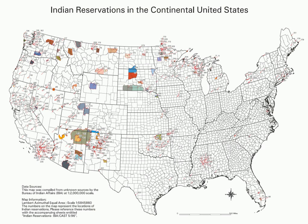In 1887, Congress undertook a significant change in reservation policy by the passage of the Dawes Act, or General Allotment Act. The Act ended the general policy of granting land parcels to tribes as a whole by granting small parcels of land to individual tribe members. In some cases, for example the Umatilla Indian Reservation, after the individual parcels were granted out of reservation land, the reservation area was reduced by giving the "excess land" to white settlers. The individual allotment policy continued until 1934 when it was terminated by the Indian Reorganization Act.